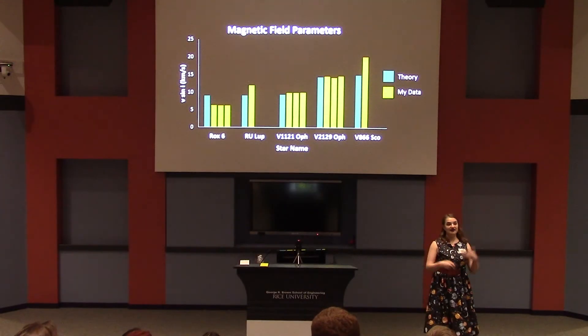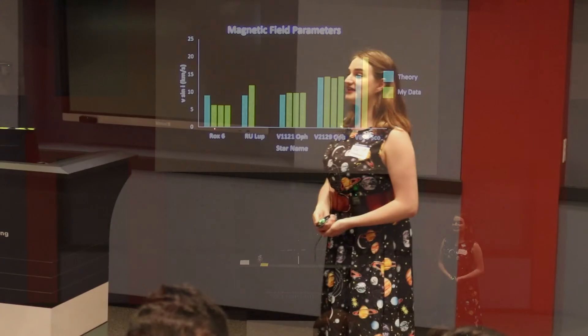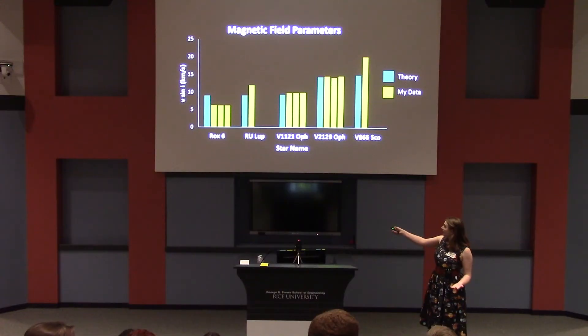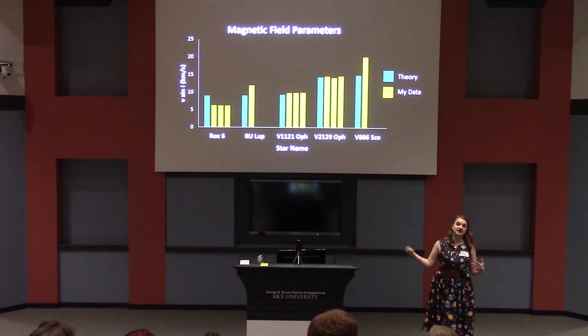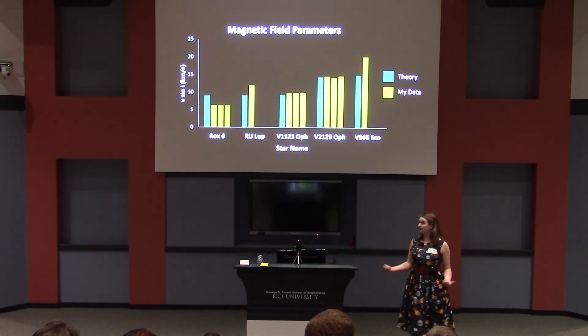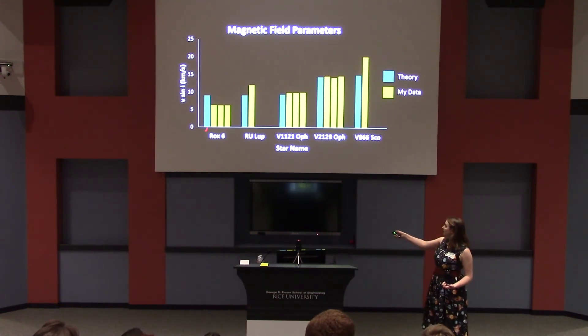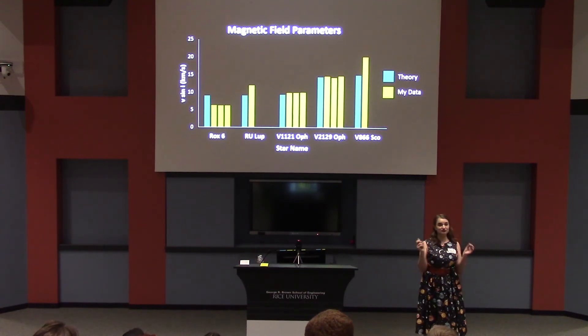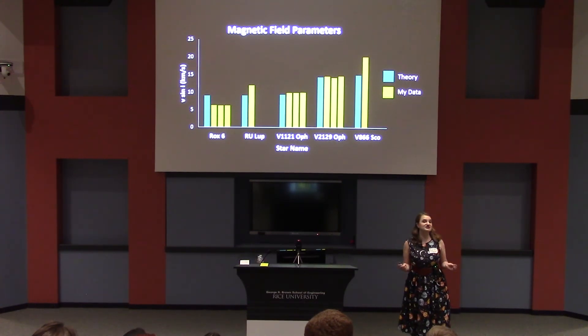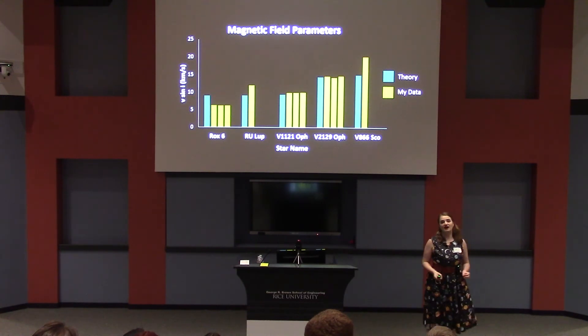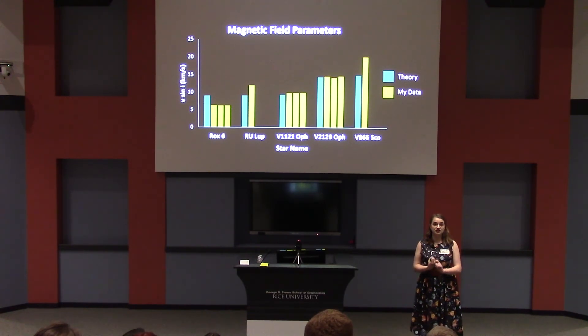Once it's fitted, I have numbers telling me how fast that star rotates and also how strong its magnetic fields are. Then we can take these numbers and go back to the theory and to other scientific papers and ask how we're doing. These green bars here are numbers that other scientists have gotten through different methods of looking at these stars, and these yellow bars are ones that I've gotten through different stars. They line up really well, which is good news because it means we're probably on the right track — our models are good, our methodology is sound, and we're ready to move forward.